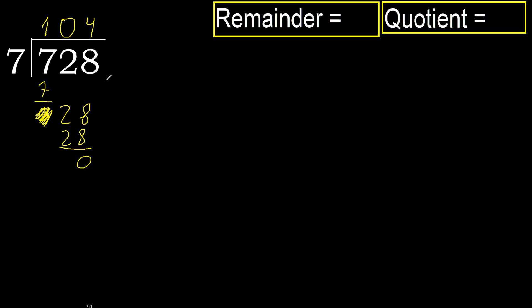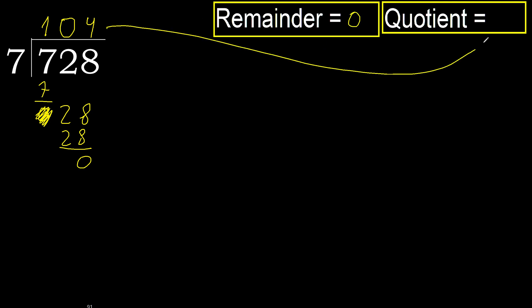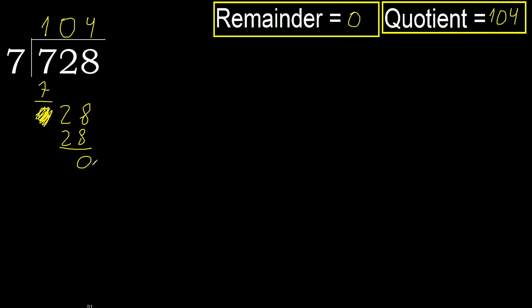Subtract. Next — that is not a number, therefore finish it. The remainder is 0. Therefore 728 divided by 7 is 104.